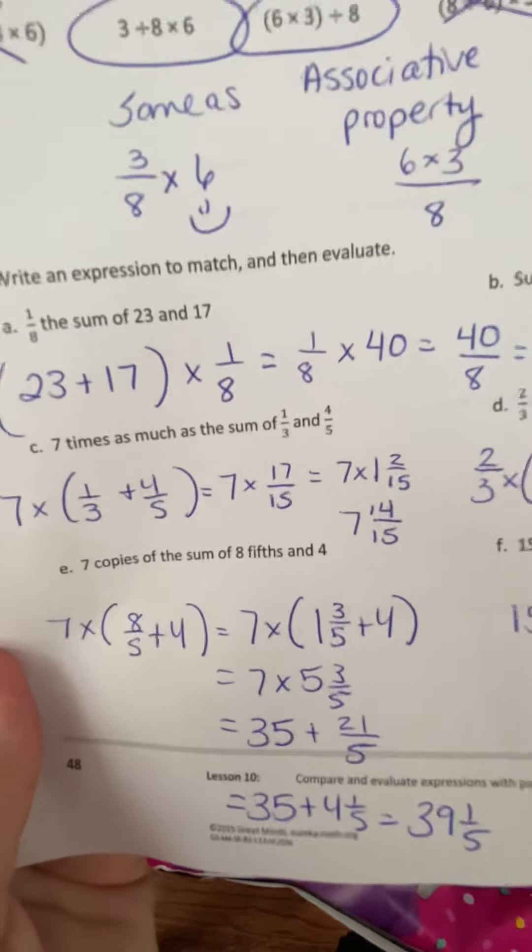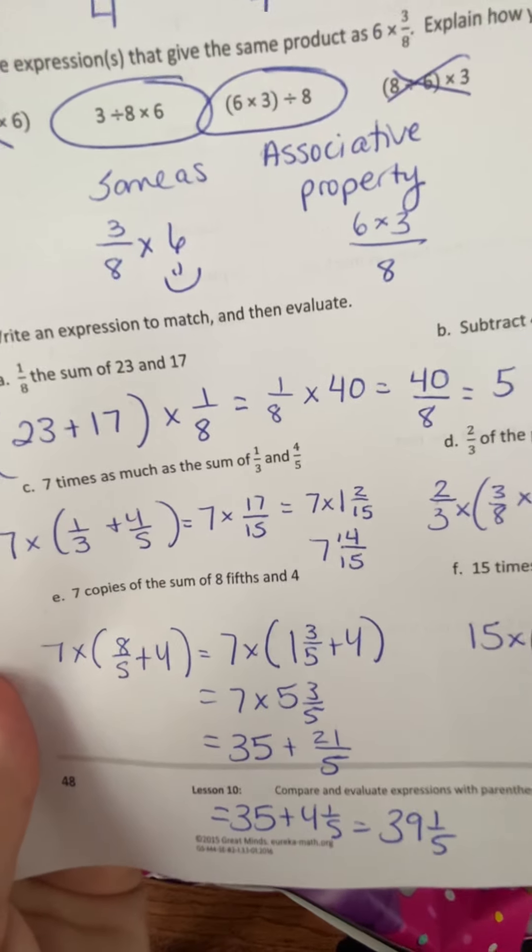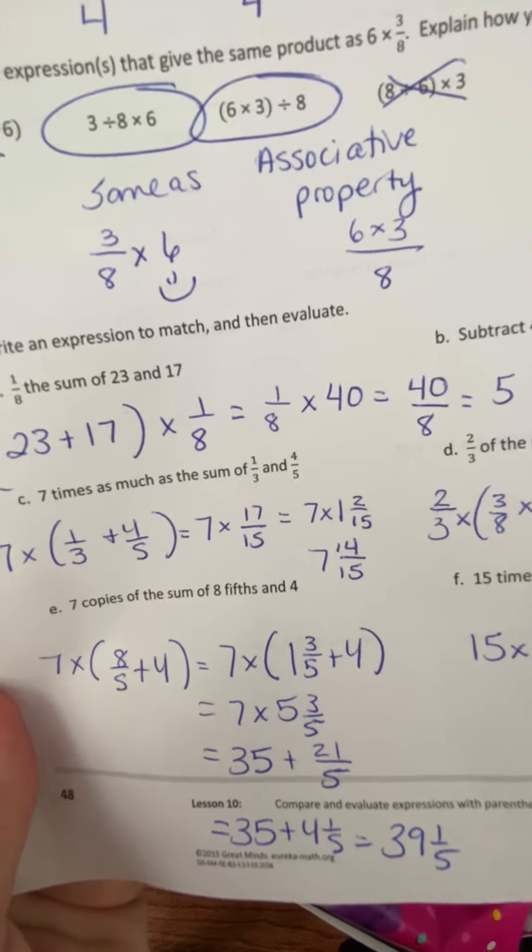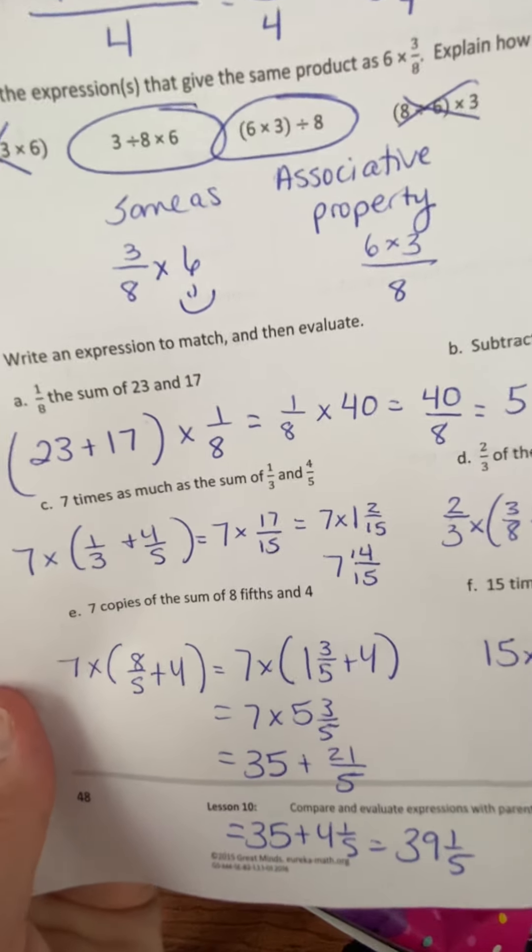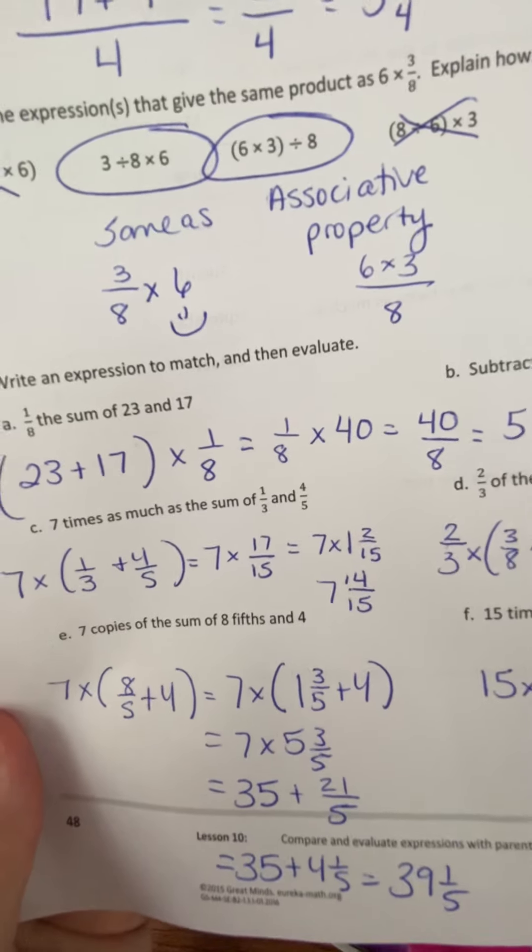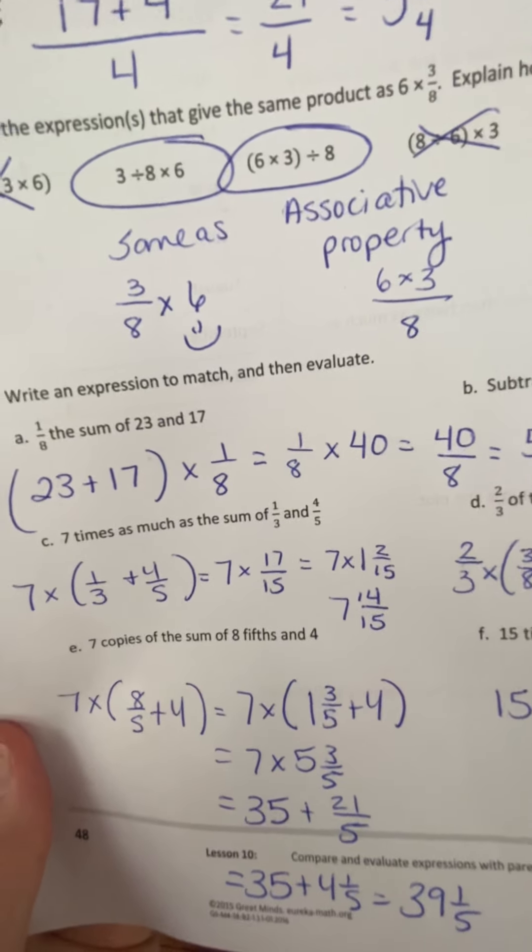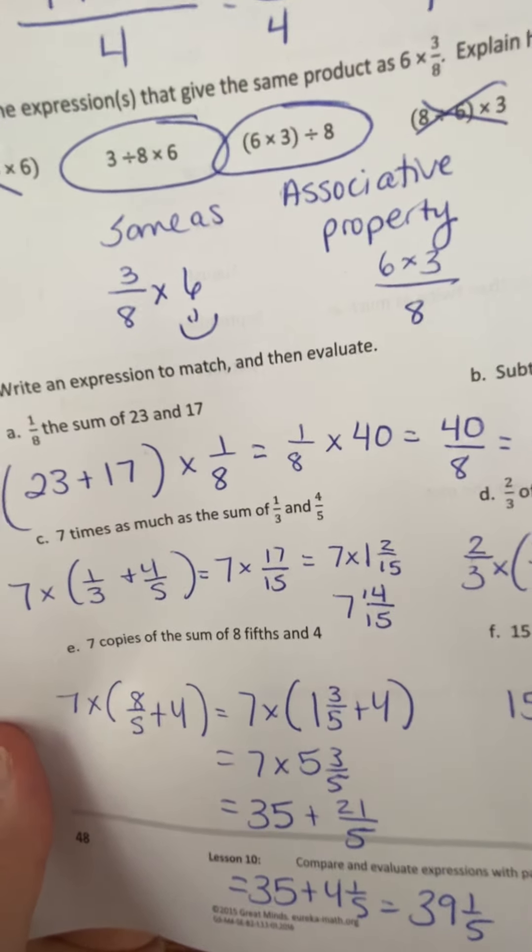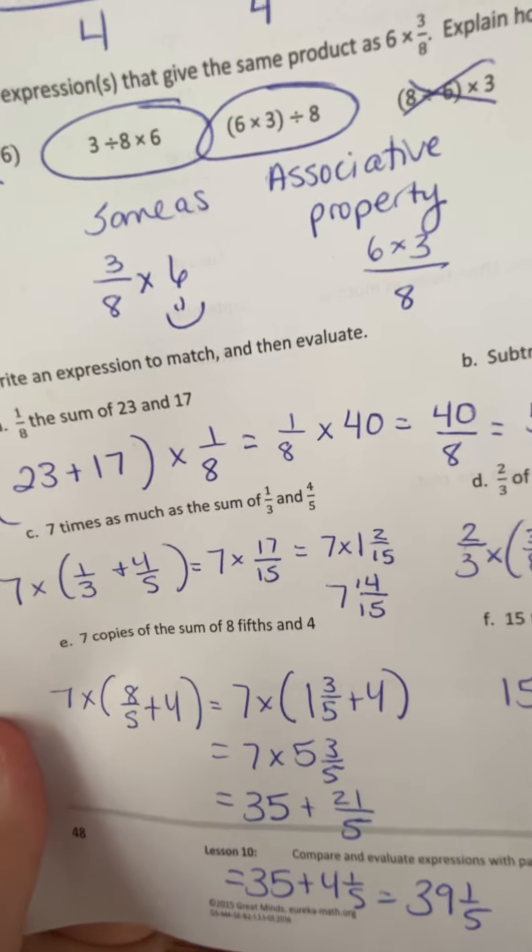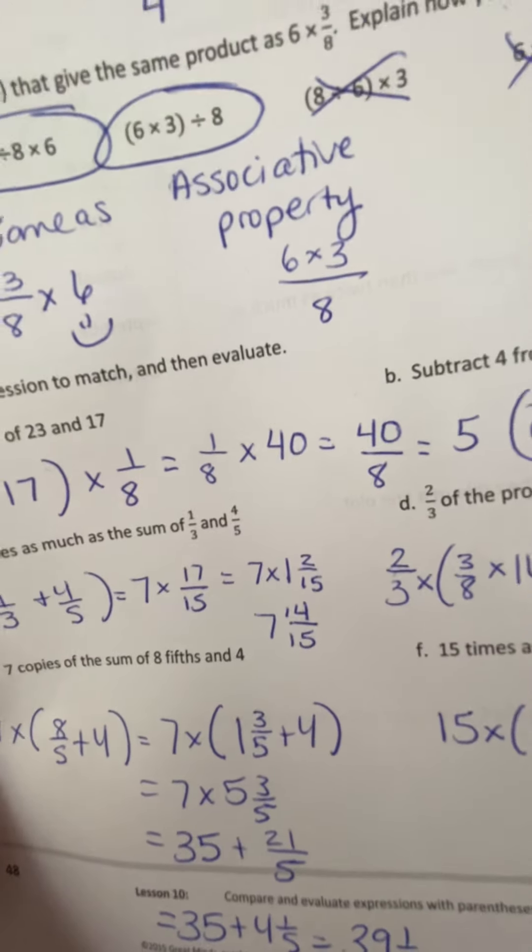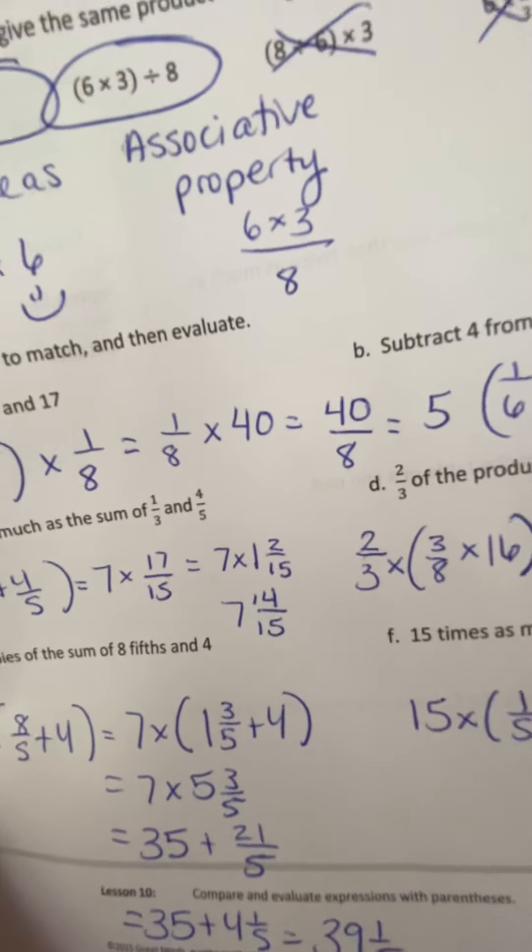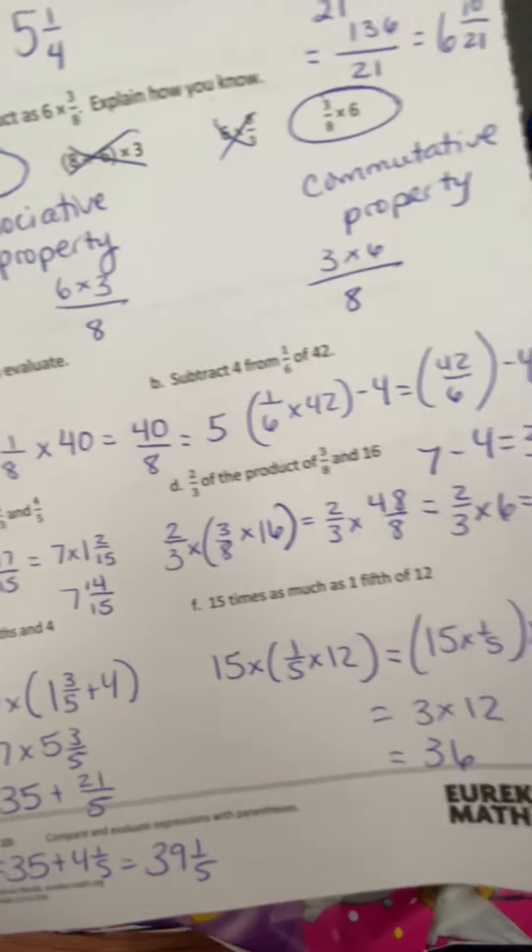Letter C. 7 times as much as the sum of 1 third and 4 fifths. So first you want to add, find the sum of 1 third and 4 fifths. You can go ahead and find the least common denominator, which is 15, and that will take you to 7 times 17 15ths or 7 times 1 and 2 15ths. That will get you to your total of 7 and 14 15ths.